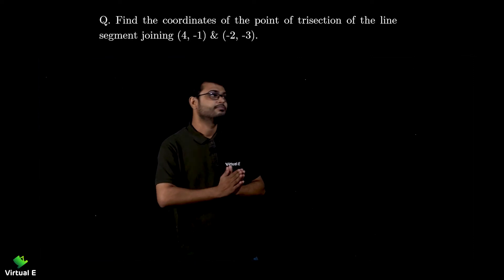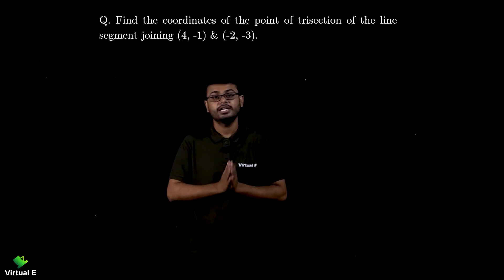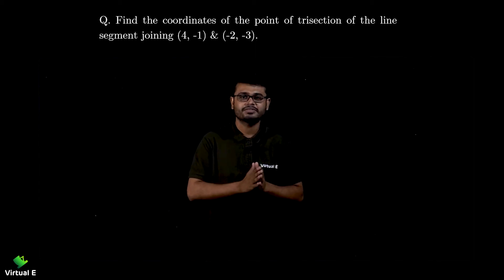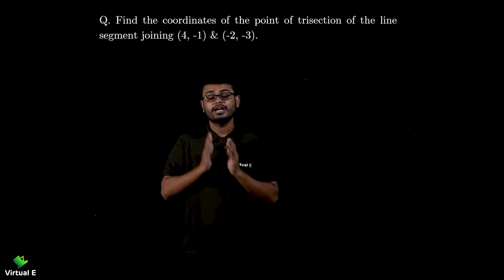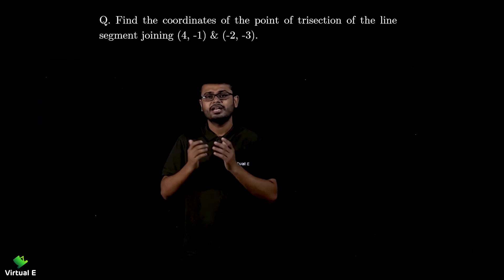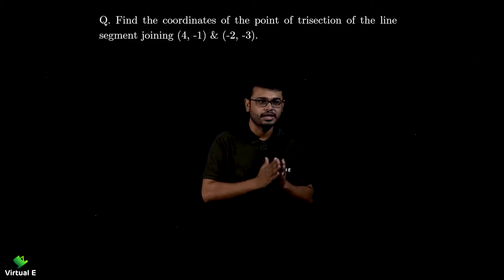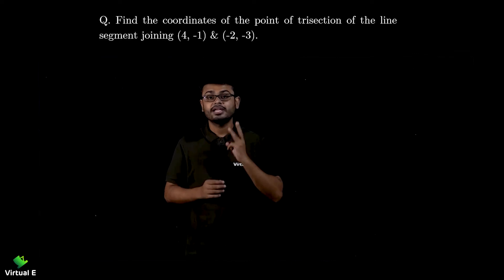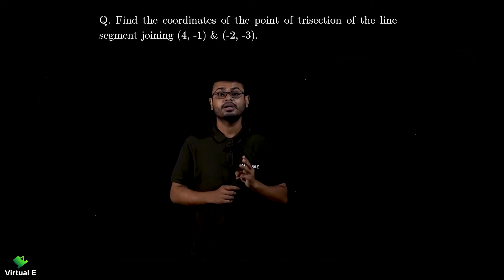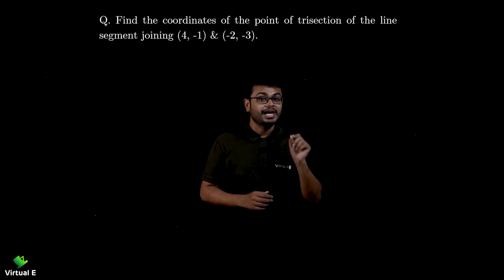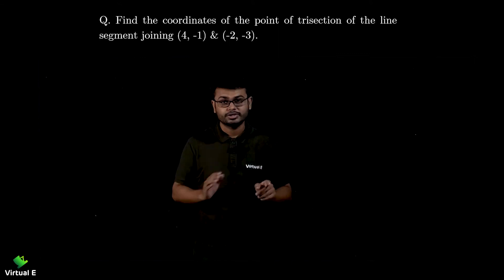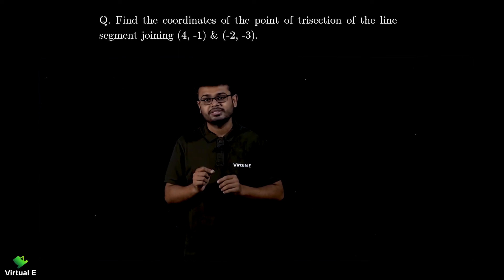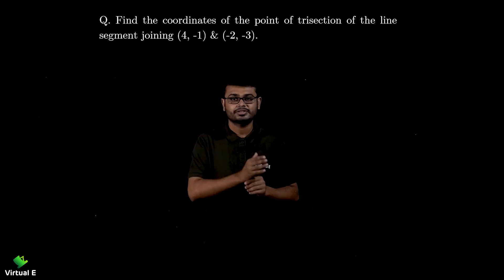Let's discuss one important concept. So far we divided a line into two parts, maybe equal or not equal. If we talk about equal parts, we get the midpoint. If we are talking about a different ratio, we discussed that in the previous session with ratio m1 by m2 or k by 1. Now in this session, we are going to discuss a case where we divide a line into three equal parts. This topic is also called trisection — we are dividing into three parts, that's why three sections.